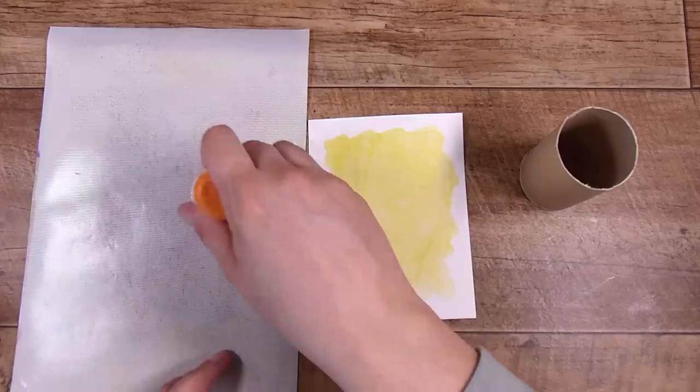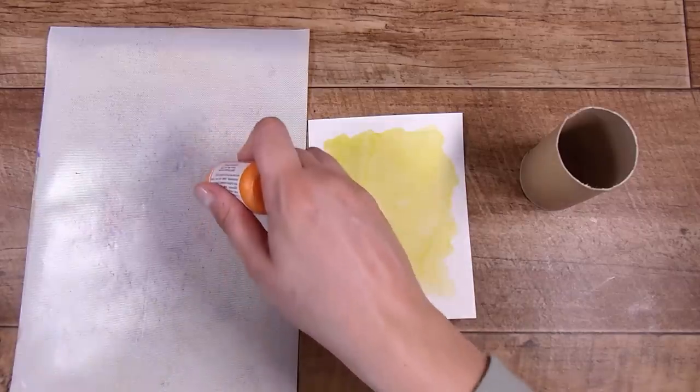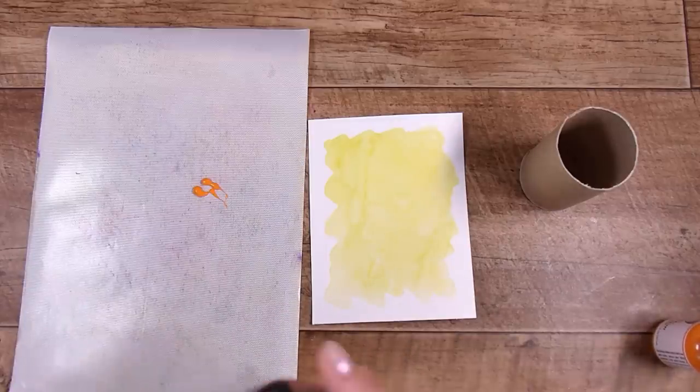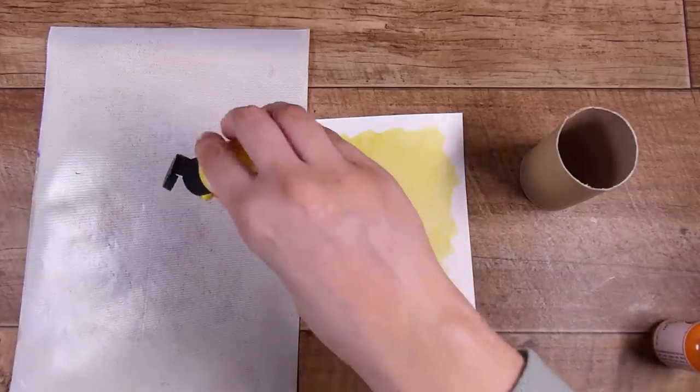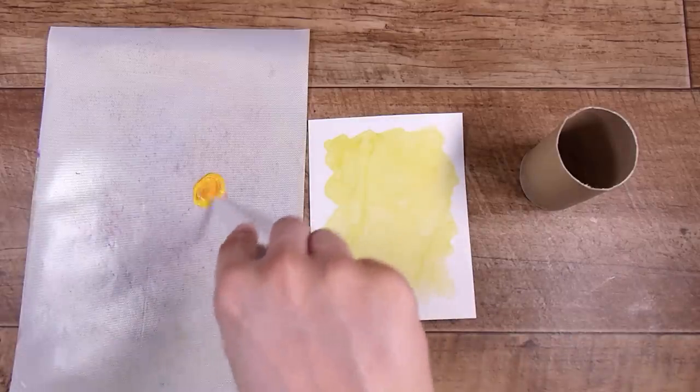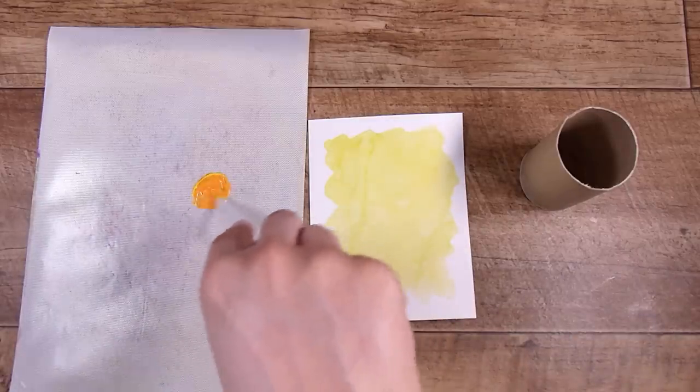Now I'm going to take some orange acrylic paint and some yellow acrylic paint and mix them together. This is just to tone down the orange a little bit because it was a little bit bright for what I wanted. Any paint is obviously going to work just fine for this.